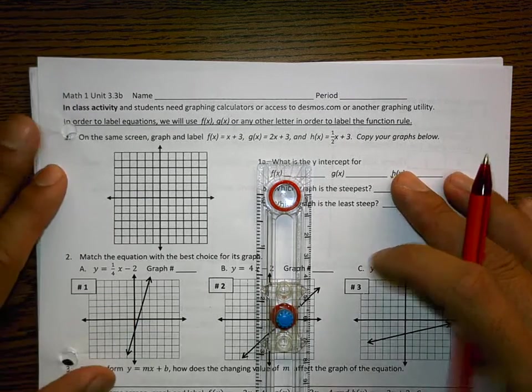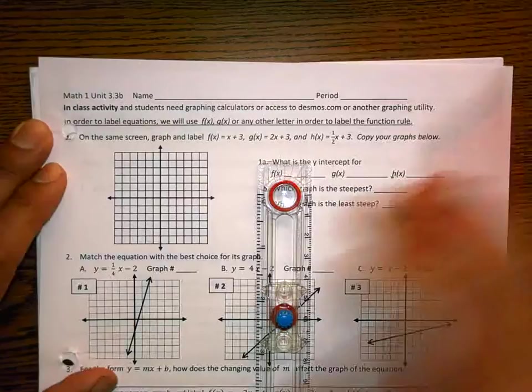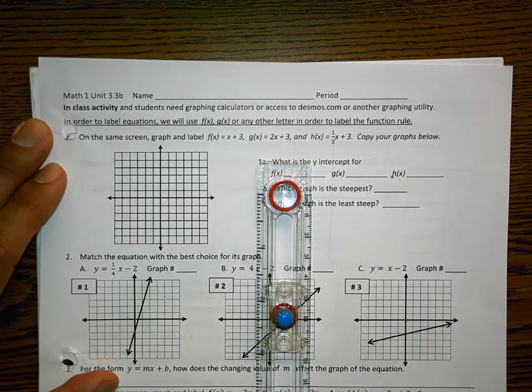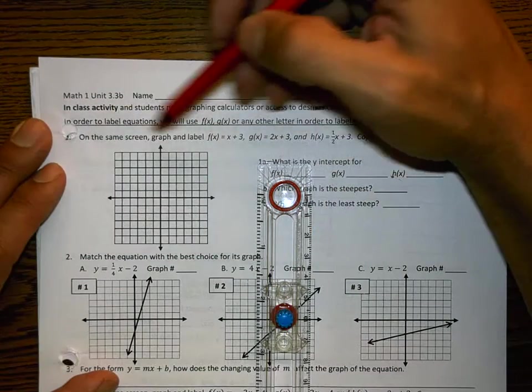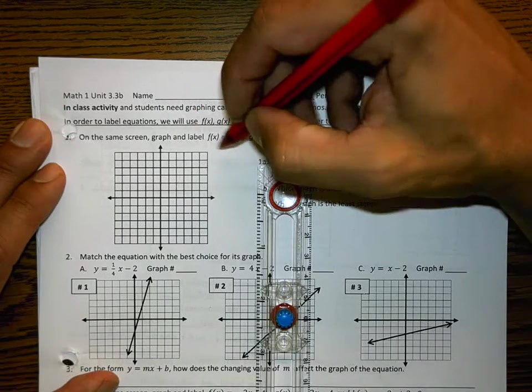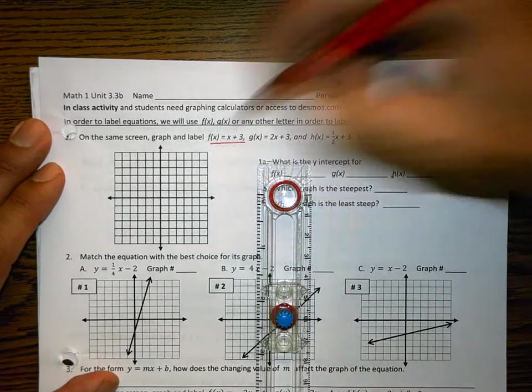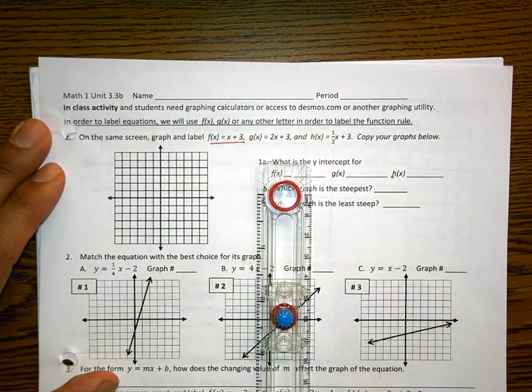Let's begin. We are on the in-class activity for 3.3b's worksheet. What this tells us to do is to graph these three functions: f of x, g of x, and h of x.